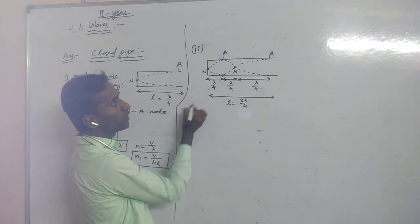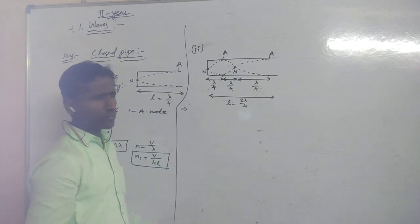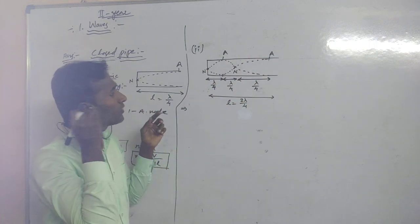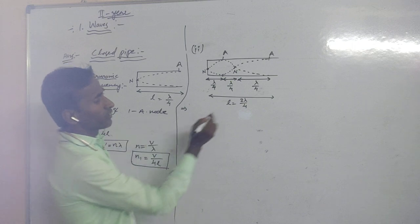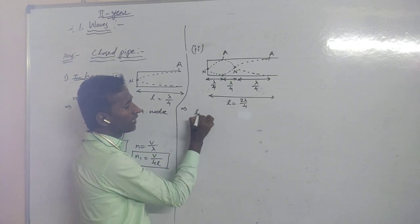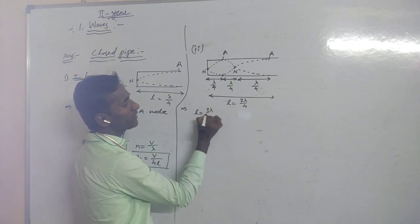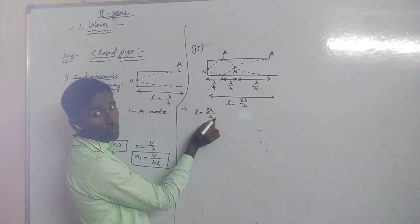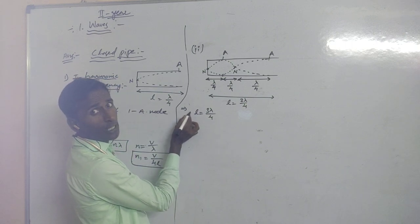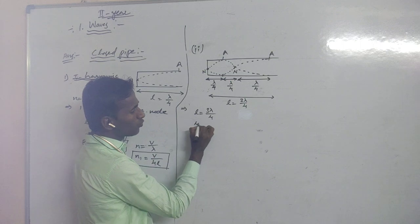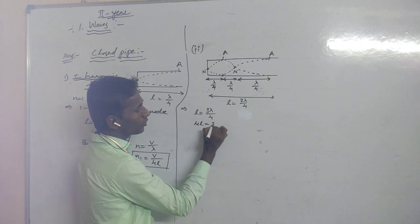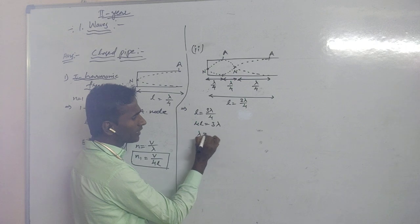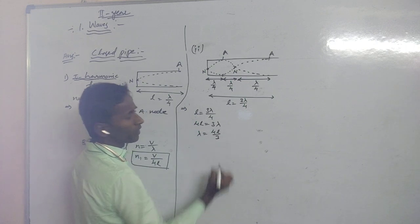In this frequency, 2 nodes and 2 anti-nodes are formed. The total distance L equals 3·lambda by 4. Rearranging: 4L equals 3·lambda, so lambda equals 4L by 3.